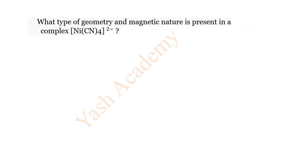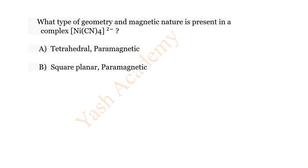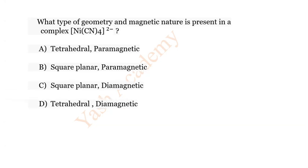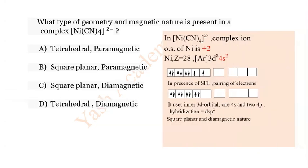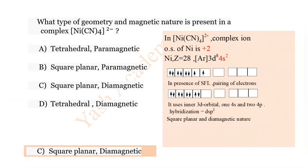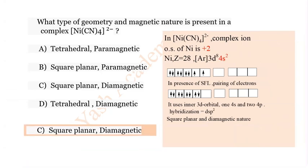Question 8: What type of geometry and magnetic nature is present in the complex [Ni(CN)₄]²⁻? Options: A) Tetrahedral paramagnetic, B) Square planar paramagnetic, C) Square planar diamagnetic, D) Tetrahedral diamagnetic. The correct answer is C) Square planar and diamagnetic.